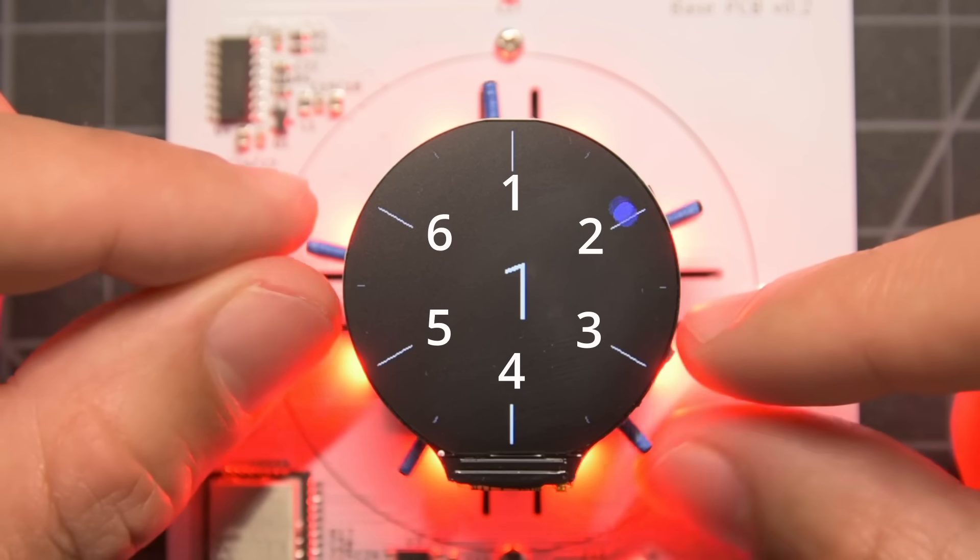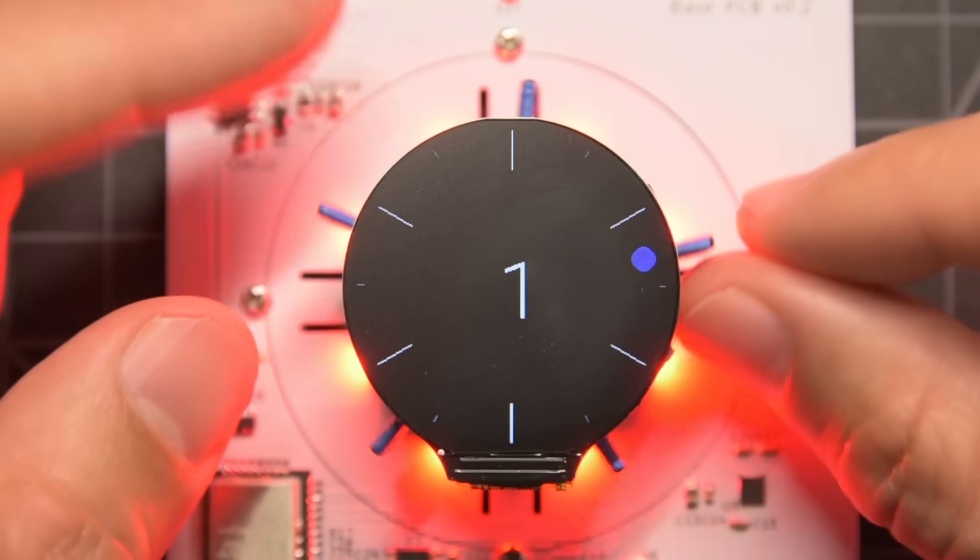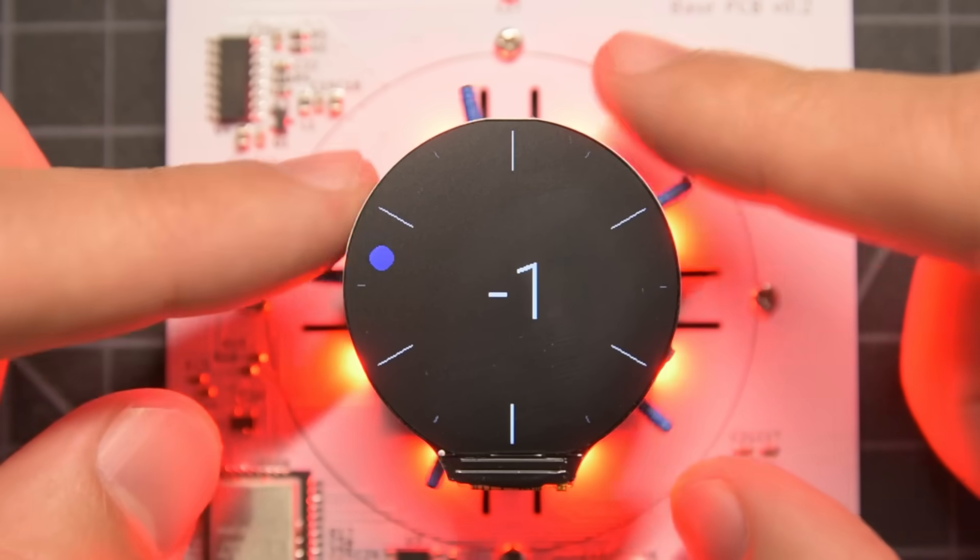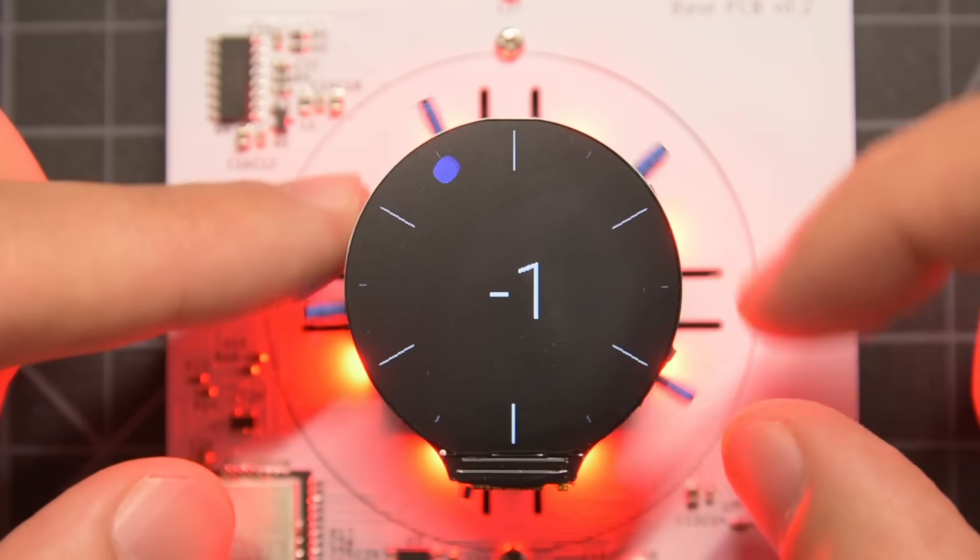Let's say we want there to be 6 virtual detents. If the motor applies no torque, the knob can spin freely letting us choose from those 6 options.